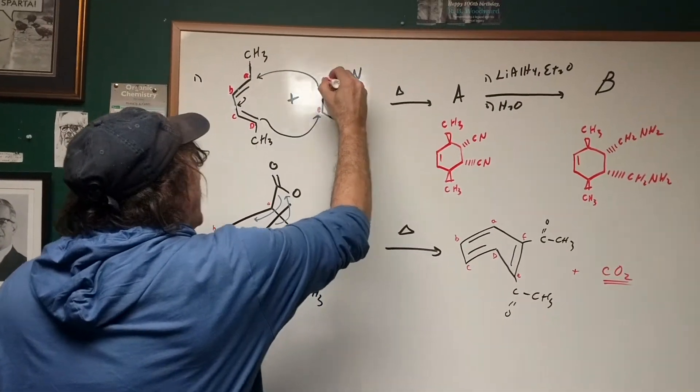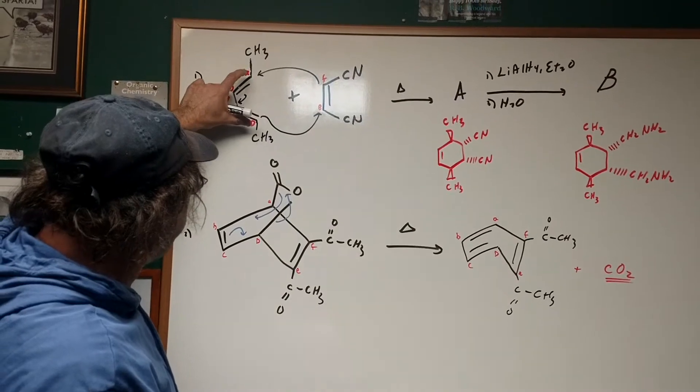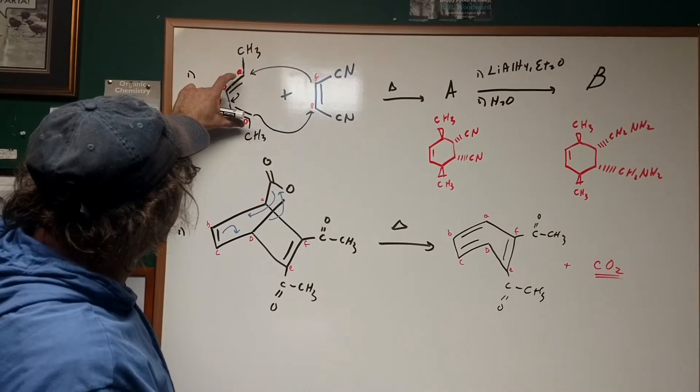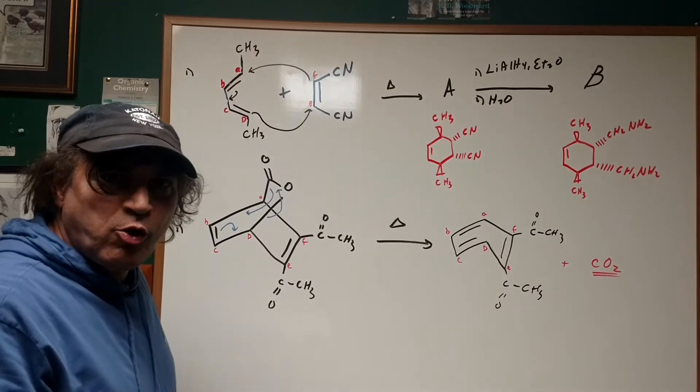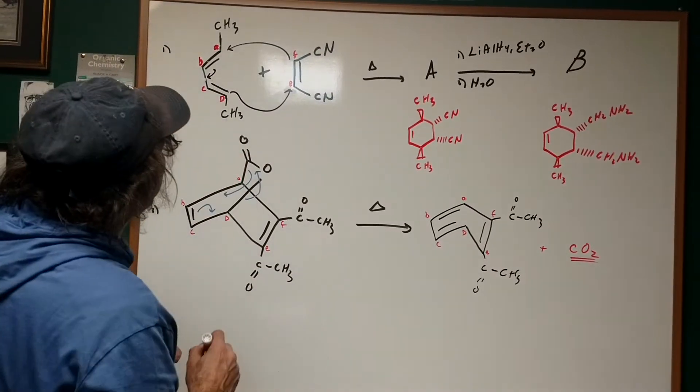I'm going to label the carbons so no one gets lost. Notice in a Diels-Alder reaction, four carbons will come from the conjugated diene and two carbons come from the dienophile. Now, here's where it gets a little tricky.